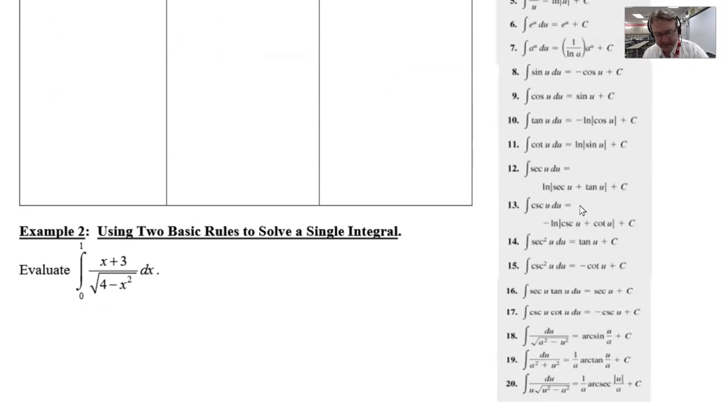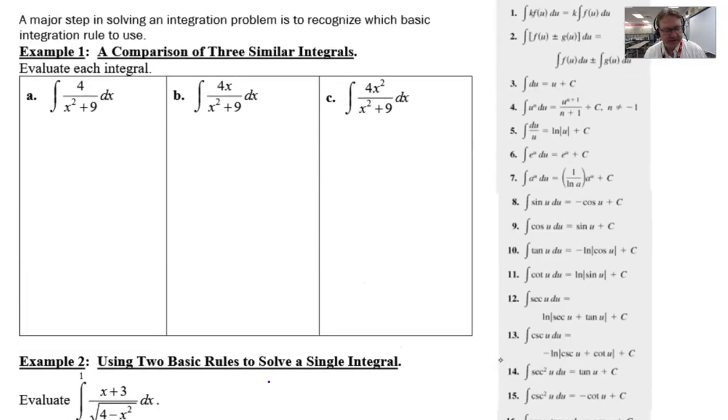and the answer is number 19. This is an arc tangent form where all we need to do is recognize what a and u are and then just basically use our formula. So if I really wanted to break this down I might start it off by saying that the u squared value is the same as the x squared and the a squared value is the 9.